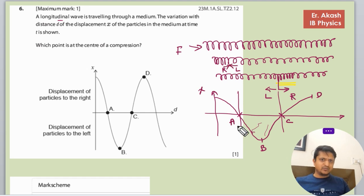This is the A point, this is the B point, this is the C point, and this is the D point. Point A is referring to this one moving towards the right and the other moving towards the left, and the center of compression is here because it is getting compressed.